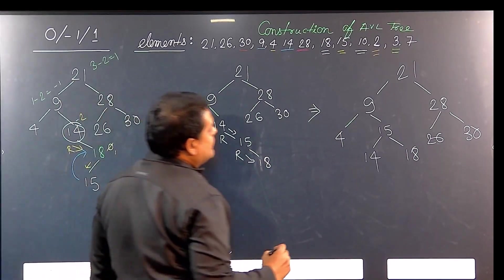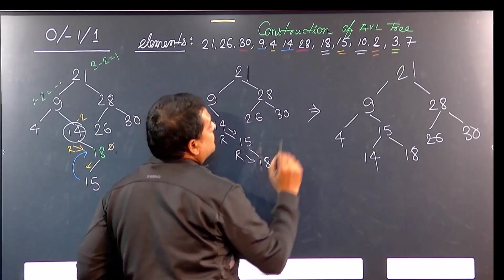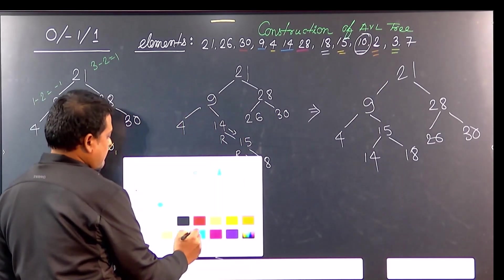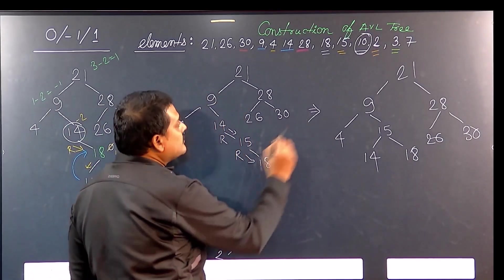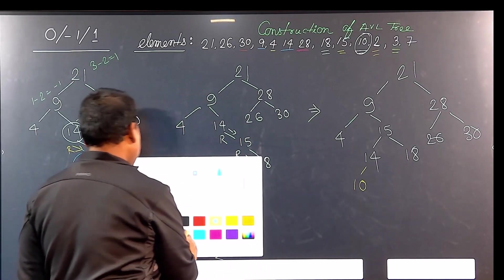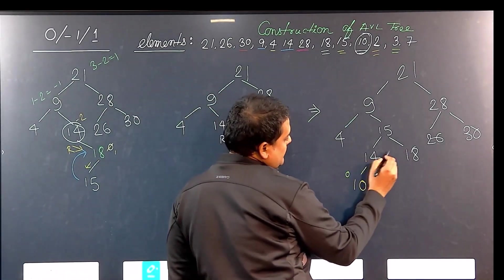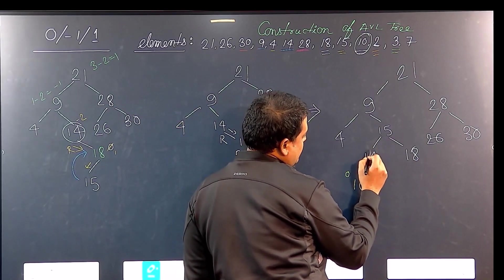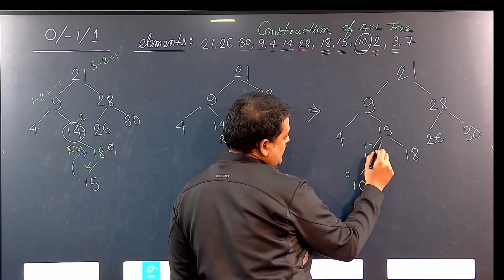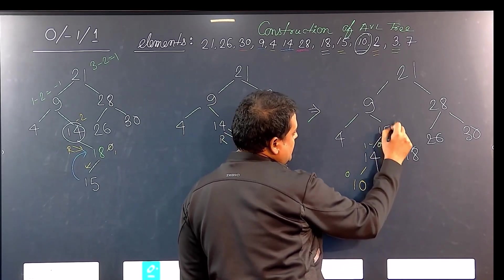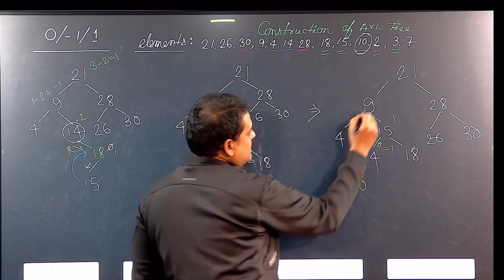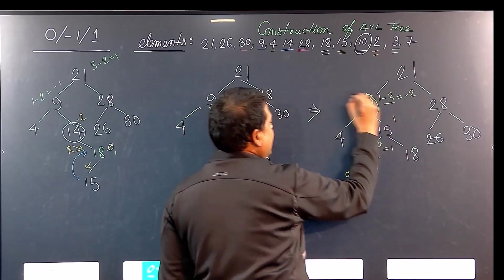What is the next element? After inserting 15, we are going to insert 10. So where will 10 be inserted? It goes: less than 21, then greater than 9, and 10 goes to the right of 9 under 14. Let me check if there is any problem. The balance factors give: 0, then 1 minus 0 = 1, then 1, then 1 minus 1 = 0, then 1 2 3, then 1 minus 3 = minus 2. So the problem is at this particular node.